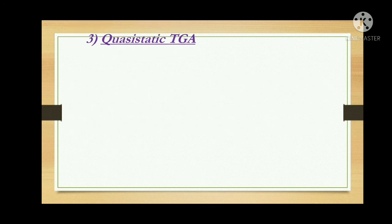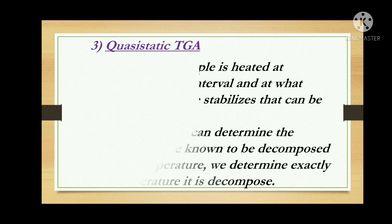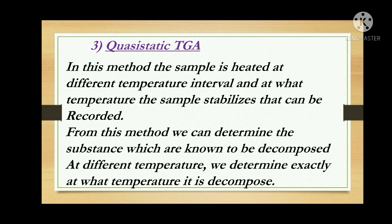The third type is quasi-static TGA. In this method, the sample is heated at different rates or different intervals of temperature, and at what temperature the sample stabilizes can be observed. We apply temperature at different intervals and record where there is no increase or decrease in weight. From this method we can determine substances which decompose at different temperatures — if we have a sample that can decompose but we don't know at exactly what temperature, this method helps us determine the exact decomposition temperature.